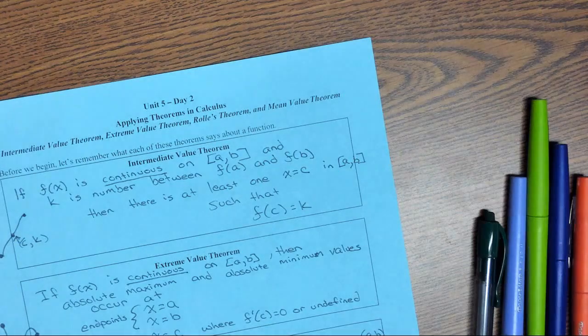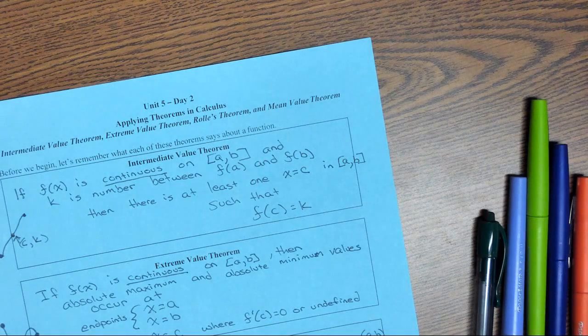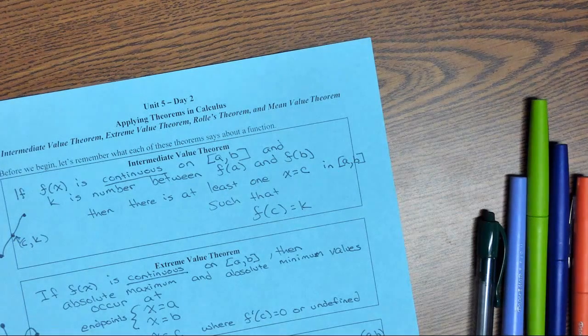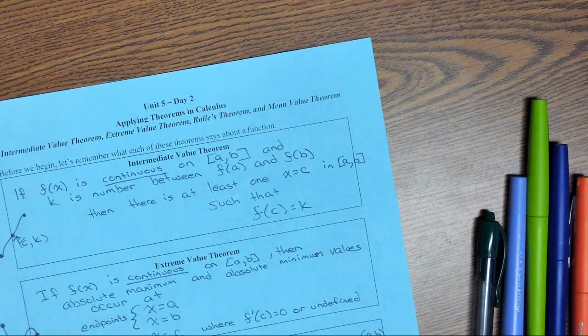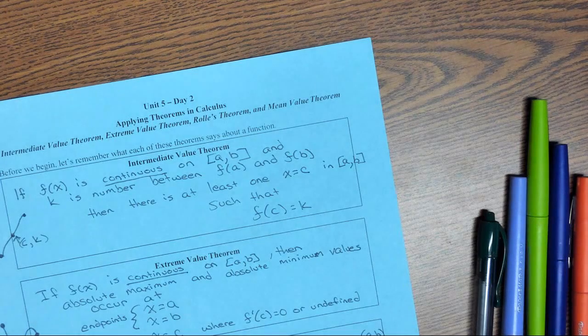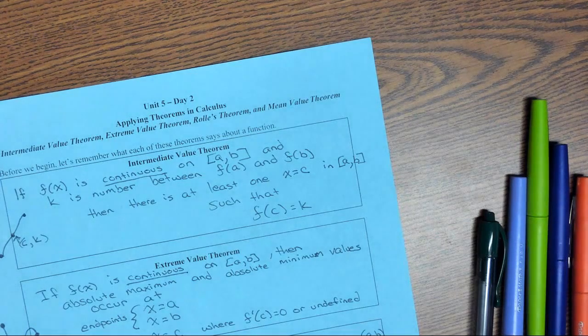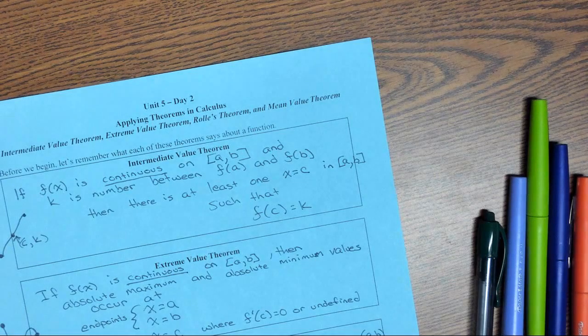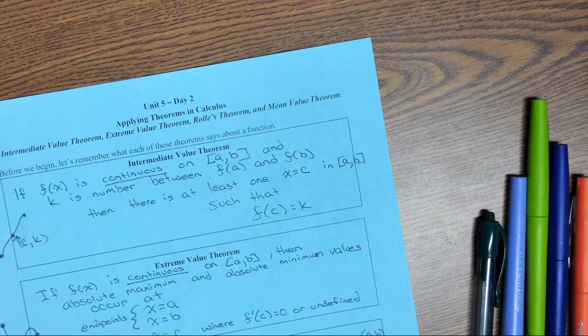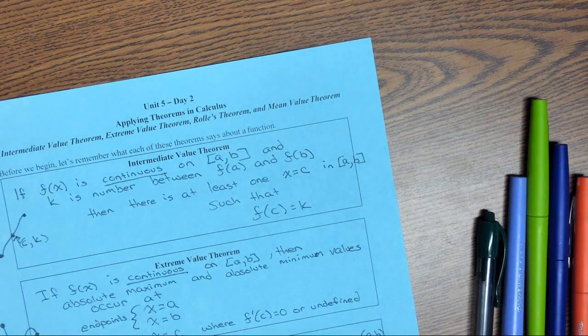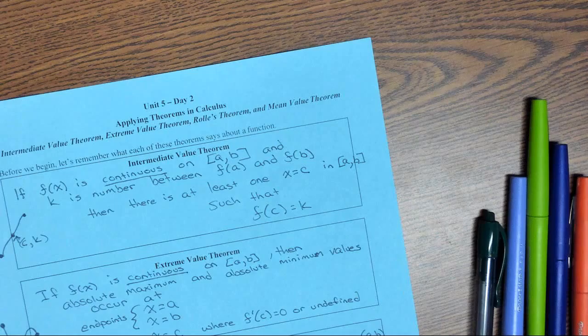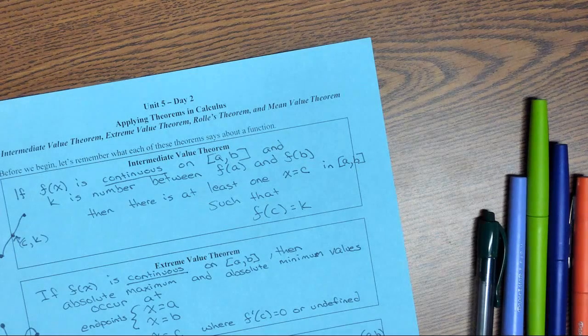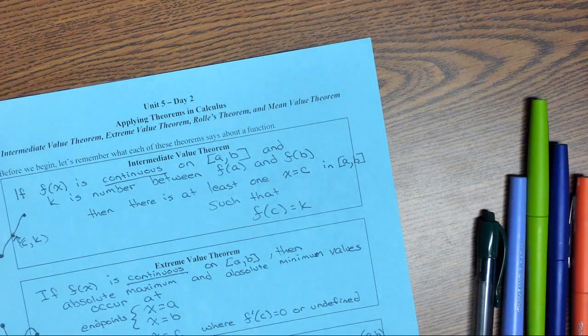Okay, to save my hands, we're going to be applying the theorems that we've learned so far: Intermediate Value Theorem, Extreme Value Theorem, Rolle's Theorem, and Mean Value Theorem. But to save my hand a little bit and save time on this video, I'm going to show each of these theorems. Now, if you're needing to copy them down, you can always pause the video and copy it and then continue on.